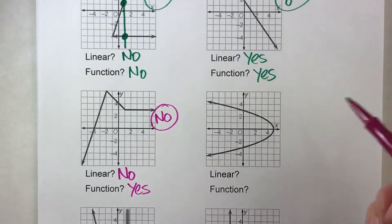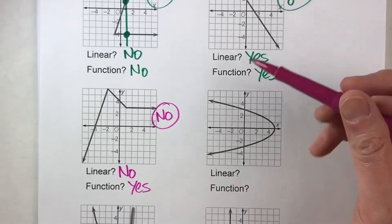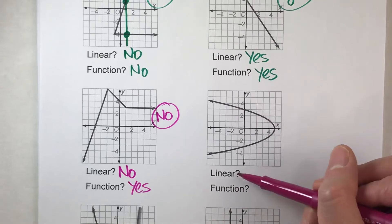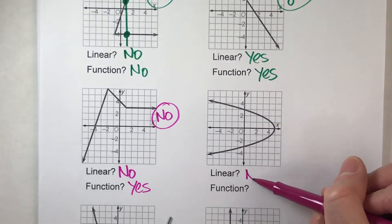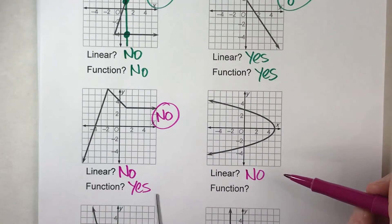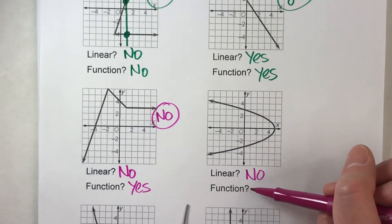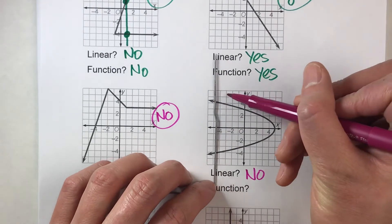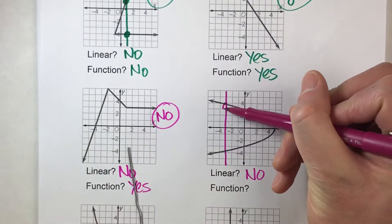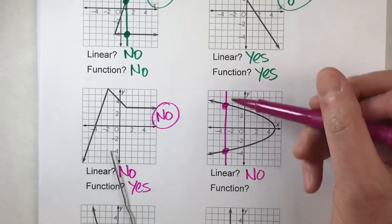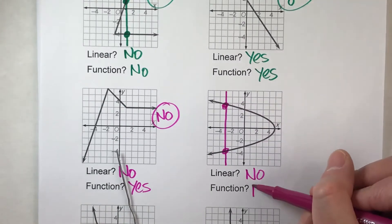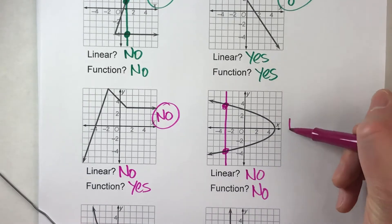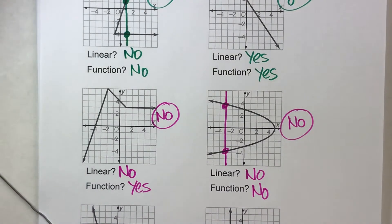This next one is interesting — it's a sideways U-shape called a parabola. Is it linear? No, it's not a line — it's nowhere close to a line. Is it a function? If I move my vertical line, anywhere I move it in here it's going to hit the graph in more than one spot. So this is not a function. Since it's neither linear nor a function, it's definitely not a linear function.